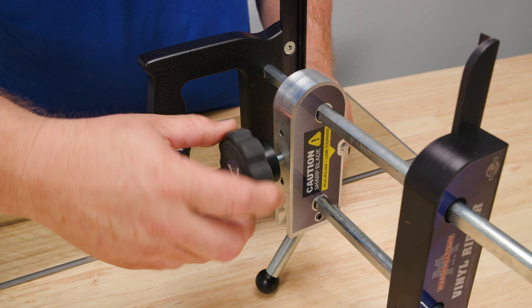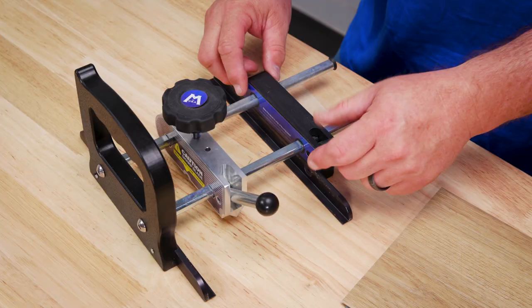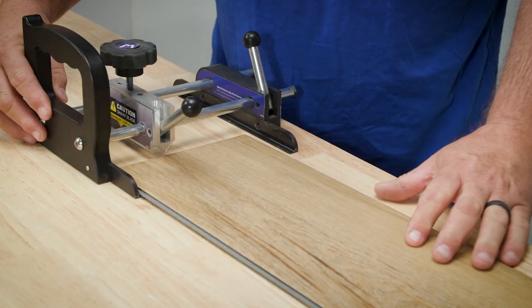Setup is key to making the Ripper work properly. To get started, rotate the scoring blade wheel adjustment knob counterclockwise to raise the scoring blade.